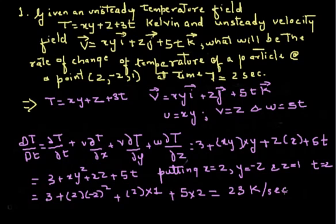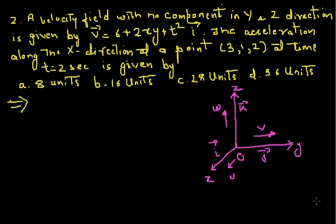This is how we can calculate the rate of change of any property — here we found the rate of change of temperature. Similarly, we can find the rate of change of any property using this material derivative. The second problem is now visible on the screen. A velocity field with no components in y and z directions is given by V = (6 + 2xy + t²)i. The acceleration along the x direction at point (3,1,2) at t = 2 seconds is: a) 8 units, b) 16 units, c) 28 units, d) 36 units.